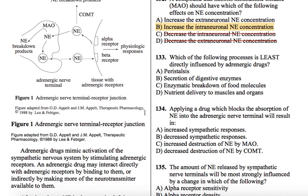Which of the following processes is least directly influenced by adrenergic drugs? This passage gives us examples and reminds us what sympathetic responses are. We know generally that fight-or-flight responses like to inhibit digestion — they dilate the pupils, dilate blood vessels going to muscles, but constrict them in areas not necessary for fight-or-flight, like digestive tissues. So things that are definitely affected include things related to digestion. Peristalsis is going to be inhibited — that's a digestive function.